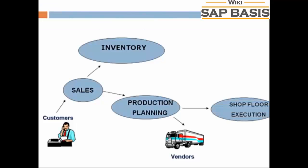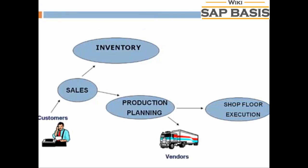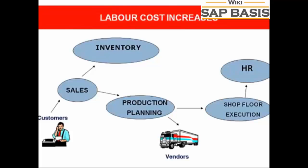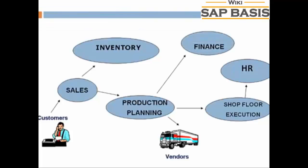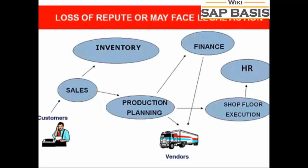Once the raw material is available, the shop floor department suddenly realizes they are short of workers. They approach HR, who in turn hire temporary employees at higher than market rates, so labor cost increases. The production planning department also fails to update the finance department on the materials they have purchased, causing the finance department to default the payment deadline set by the vendor — resulting in loss of reputation and possible legal action.